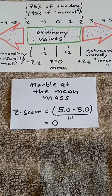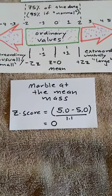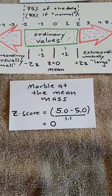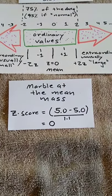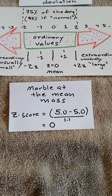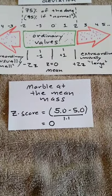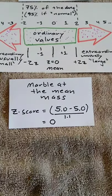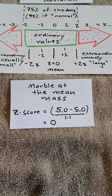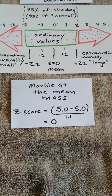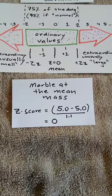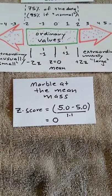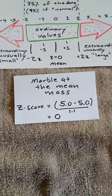One final note. If the data value is at the mean, then the z-score will be zero. A data value at the mean will have a z-score of zero, thus a marble which has a mass of 5 grams. 5 minus 5 is zero. Zero in the numerator, 1.1 in the denominator will yield a z-score of zero. So a zero z-score simply means that the data value is at the mean, at the average. It is in the middle of the data set, the arithmetic middle.